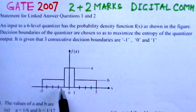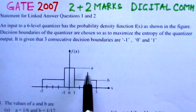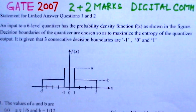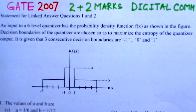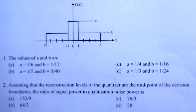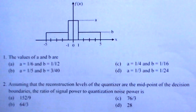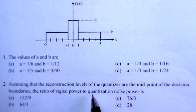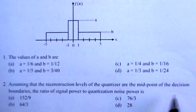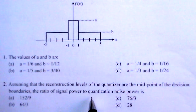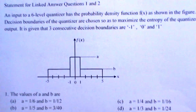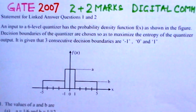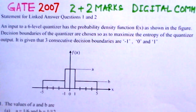It is given that three consecutive decision boundaries are minus one, zero, and one. The probability density function is given and the values of a and b are to be determined from four options. The second part asks: assuming the reconstruction levels of the quantizer are the midpoints of the decision boundaries, what is the ratio of signal to quantization noise power, out of four given options?